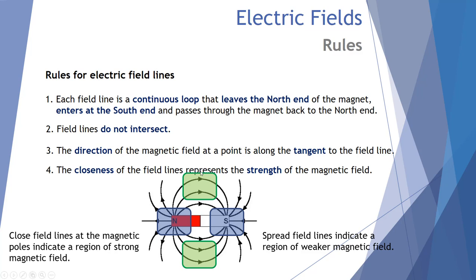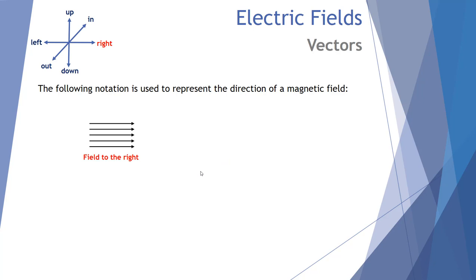Those are the four rules for magnetic field lines. Now let's look at notation for labelling magnetic fields and currents. In year 12 physics, magnetic fields are typically described as travelling left to right, up, down, or in and out of the page. Straight arrows to the right represent a field to the right; similarly, arrows to the left represent a field going left.